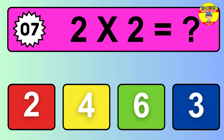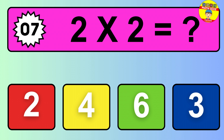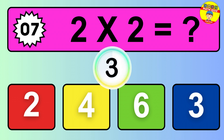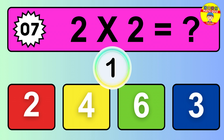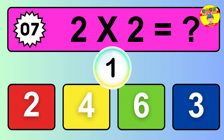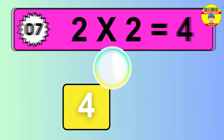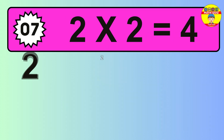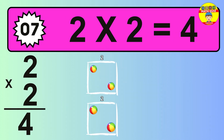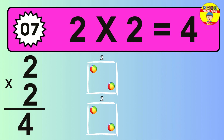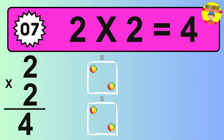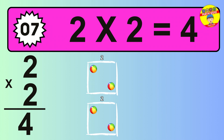Question 7. 2 times 2 equals what? The answer is 2 times 2 is 4. To calculate, we have 2 groups with 2 balls each one. So how many balls do we have? 4 balls.